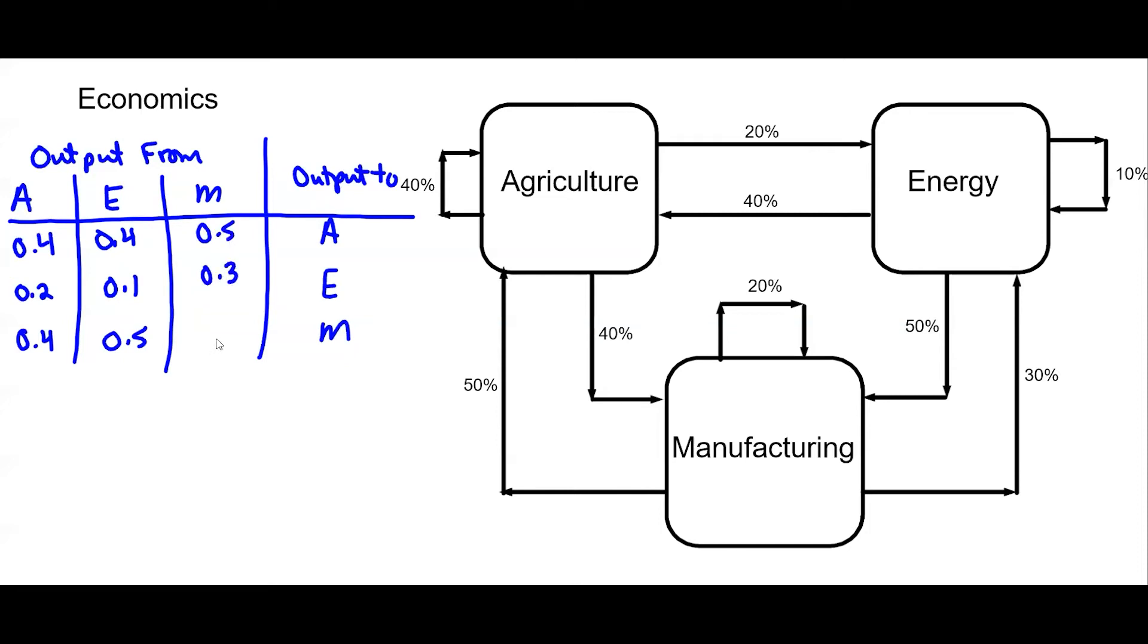50 percent to agriculture, 30 percent to energy, and it keeps 20 percent. If you add up your columns you should get 100 percent or it should equal 1.